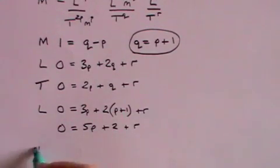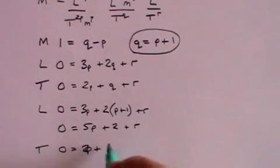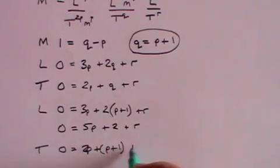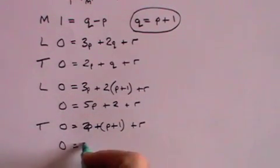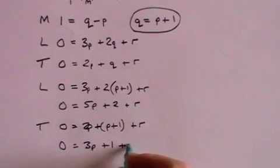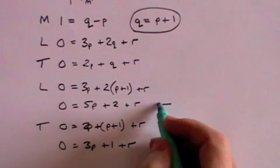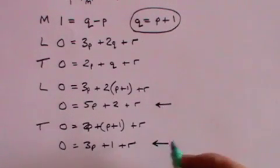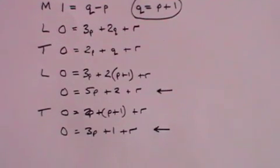And then looking at the time term we've got 0 equals 2P plus Q which is P plus 1 plus R, which of course written more simply is 3P plus 1 plus R. And now we've got this term and this term which essentially constitute two simultaneous equations. And we can subtract one from the other.